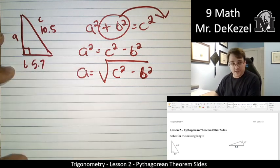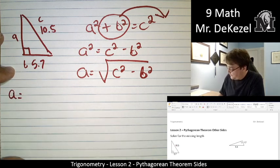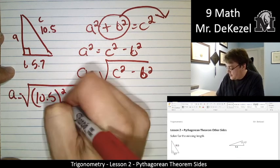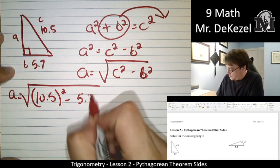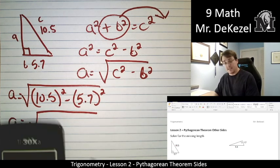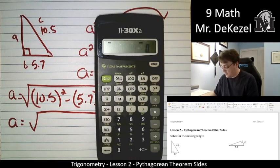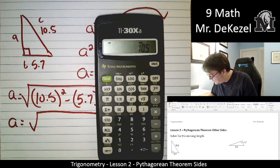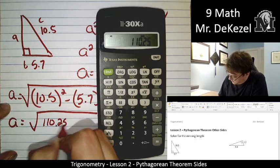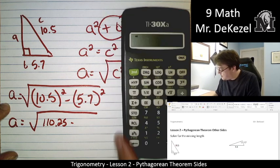As we know we have labeled our sides, we can plug everything in and find out what A is. So A equals the root of C squared. C squared is 10.5. So 10.5 squared subtract the other side squared, 5.7 squared. We're going to do those in our calculator and write them down. I think that's an important step that sometimes gets missed. Let's go ahead and do that. So 10.5 times 10.5, that's 110.25. And we're going to subtract 5.7 squared from it. That's 32.49.